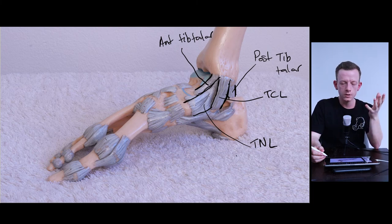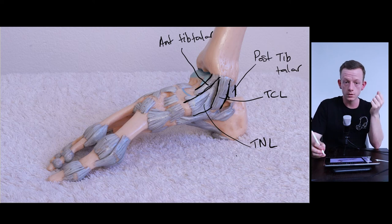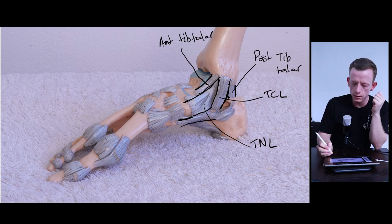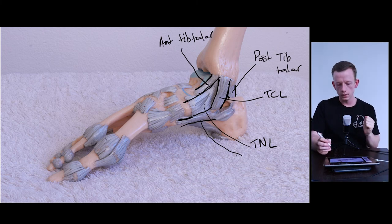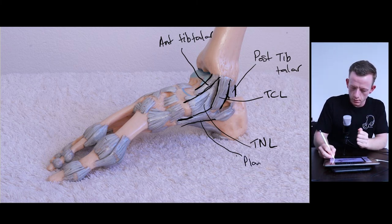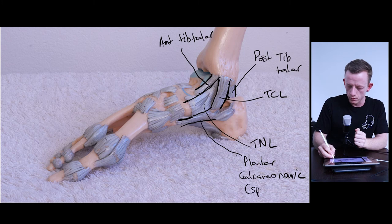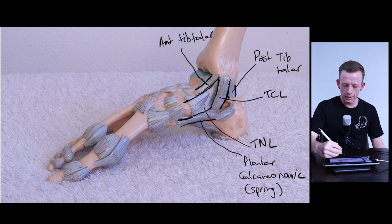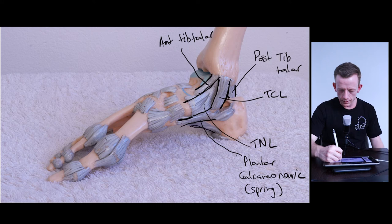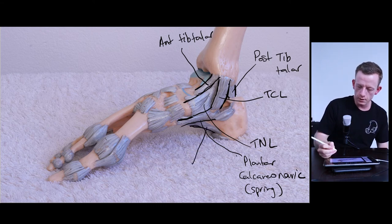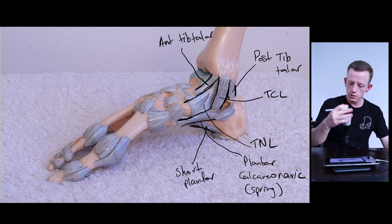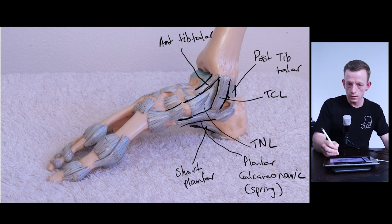To show a few other ligaments on this medial view, I want to start with the spring ligament, which sits underneath the talus. Another name for it is the plantar calcaneonavicular ligament — you can see why everyone calls it the spring, as it basically holds up the talus from underneath. Just even more plantar than that is the short plantar ligament, which I'll show better on an inferior picture. We also have some cuneeonavicular ligaments here.